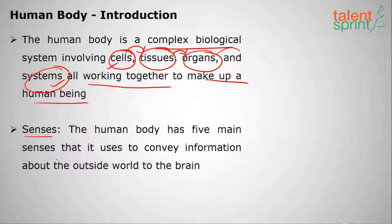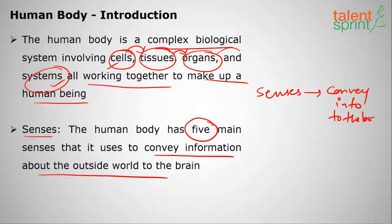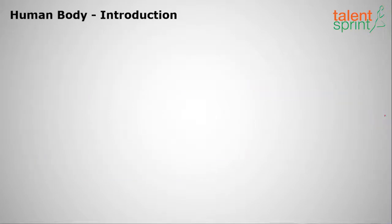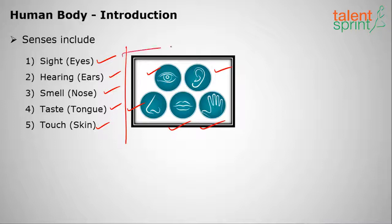Moving on to the senses — these are very basic to a human body. The human body has five major senses it uses to convey information about the outside world to the brain. These five senses are: sight (eyes), hearing (ears), smell (nose), taste (tongue), and touch (skin).